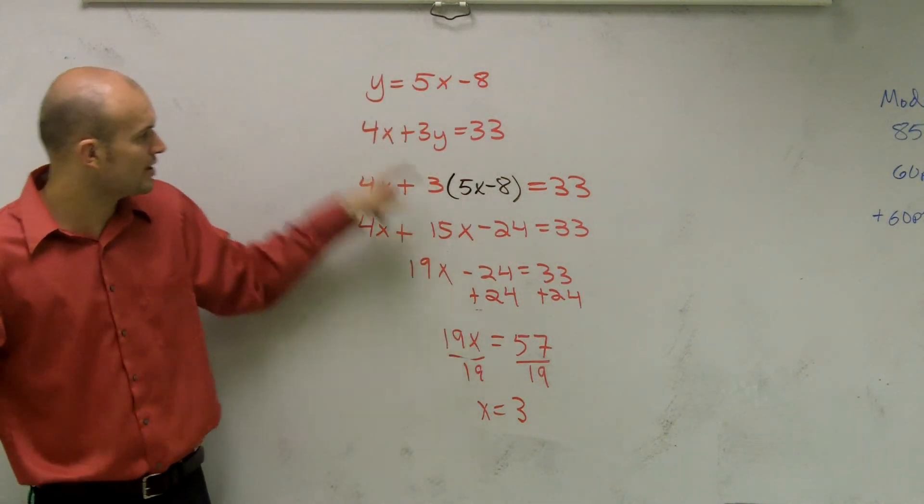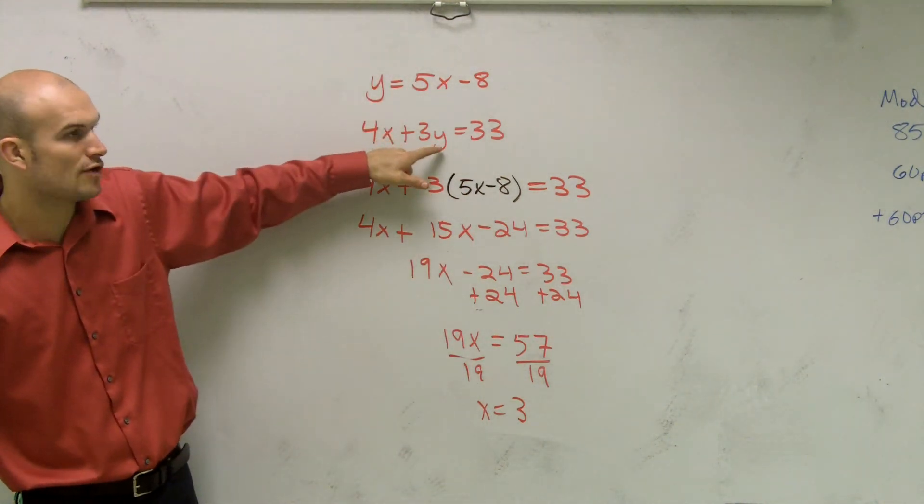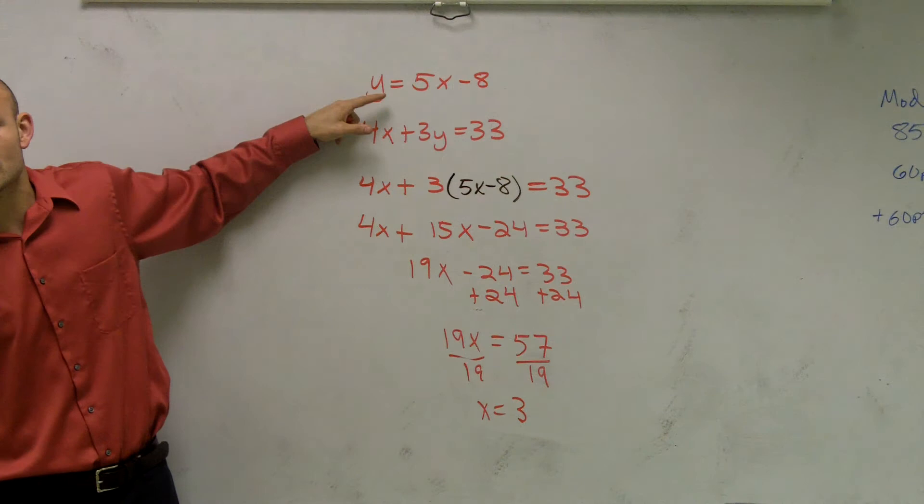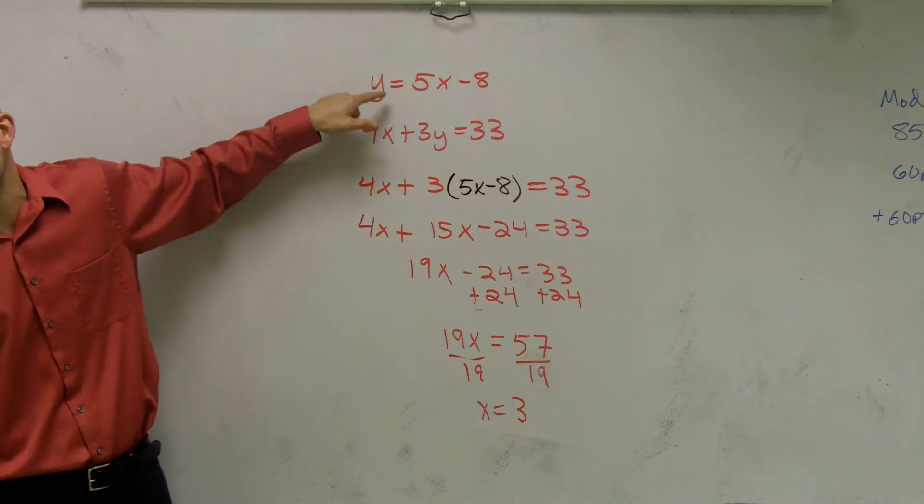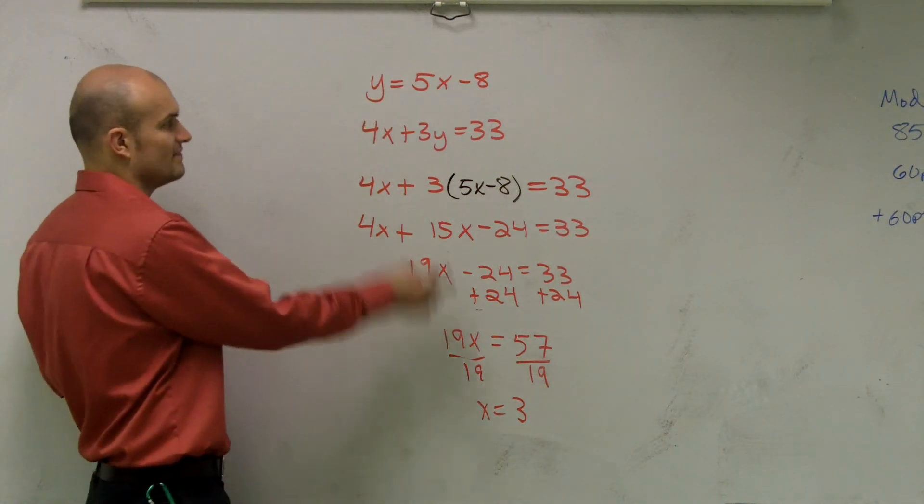It's just going to be a little bit more mathematical work. The reason being is once you plug 3 in for x, now you have to solve for y. This equation has already solved for y. So I would say this would be the fastest and easiest way to find the value of y.